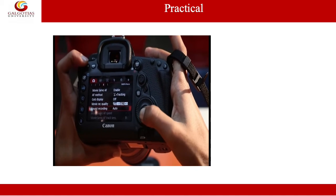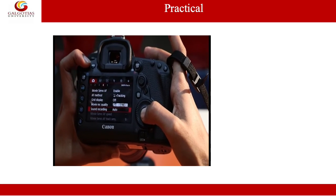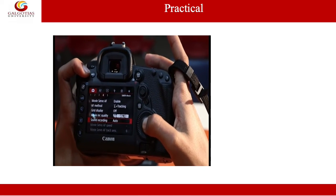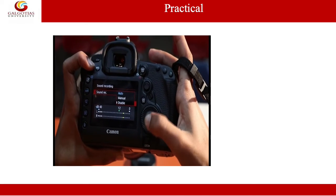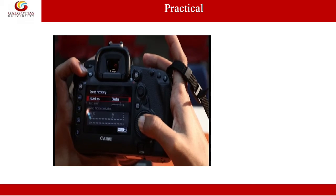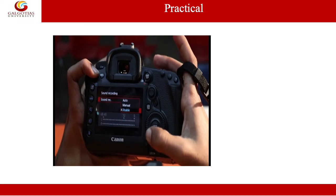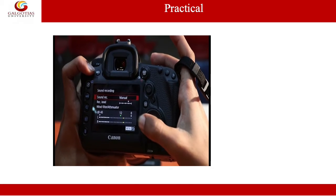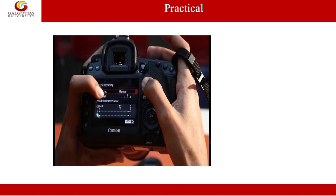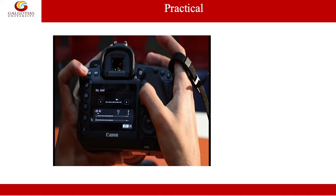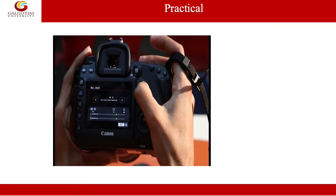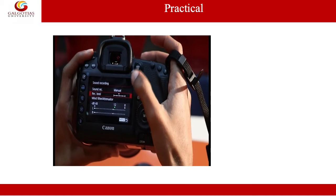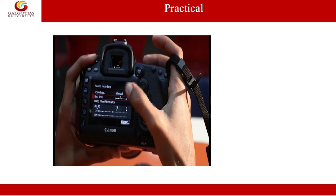The next thing here is the sound recording options. In most cases, if you are recording a video with an external mic or external sound recording facility, you can enable or disable this option by going into this menu — your video will then be recorded without any sound. You can also adjust it to manual mode where you can set the recording level. As we slide this option towards the left side, the level of audio recording decreases.